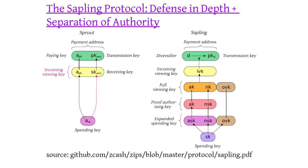Now let's talk about the protocol for payments. One thing you can easily see is that it's more complicated — if you look at Sprout on one side versus Sapling on the other side, there's a lot more stuff. The principles for adding this stuff are defense in depth and separation of authority.